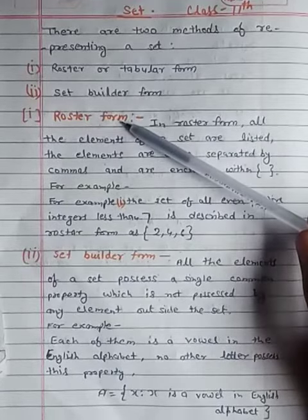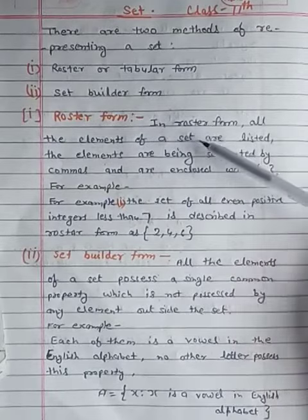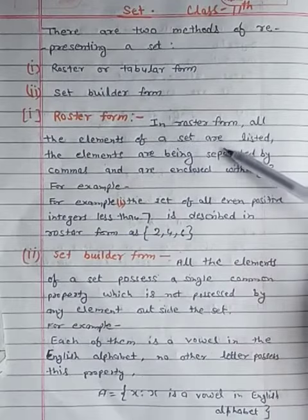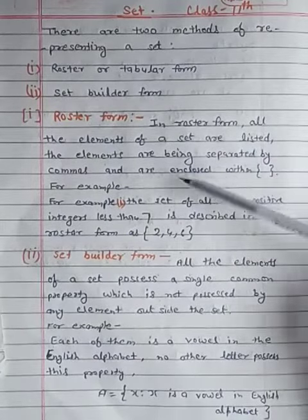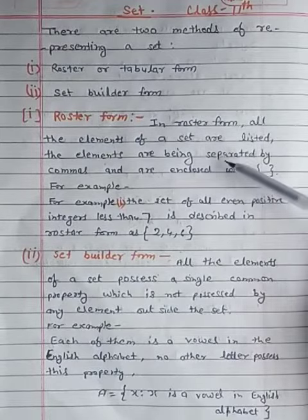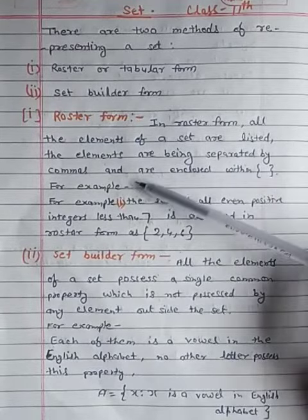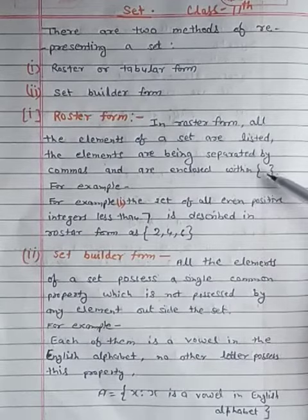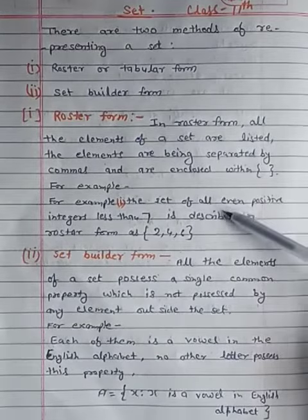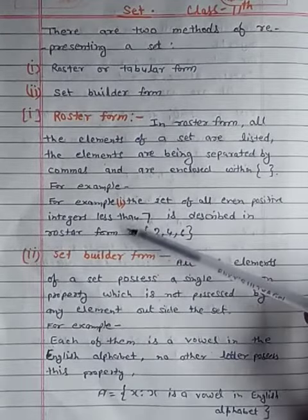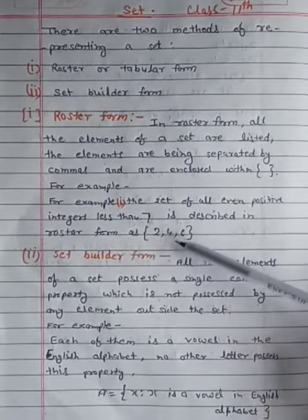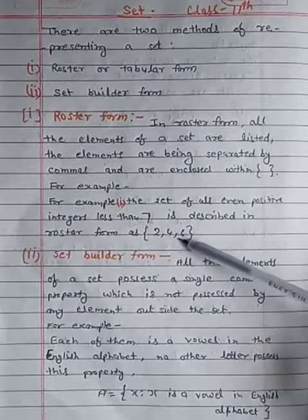Roaster form. In roaster form, all the elements of a set are listed, separated by commas and enclosed within brackets. For example, the set of all even positive integers less than 7 is described in roaster form as {2, 4, 6}.